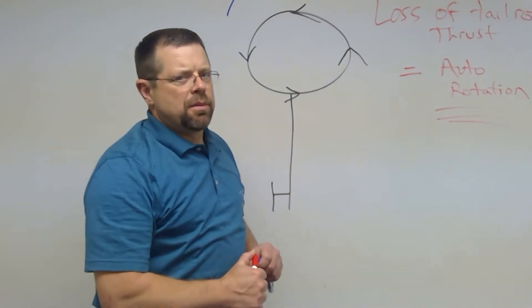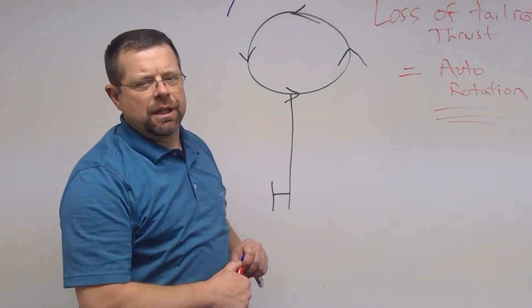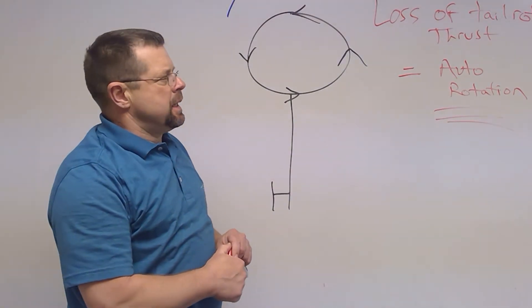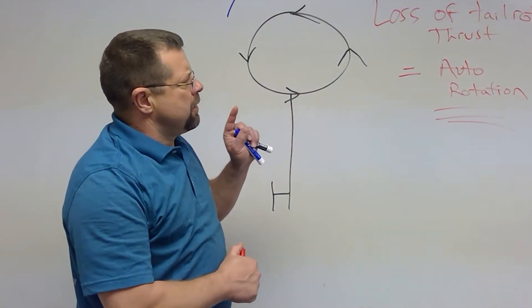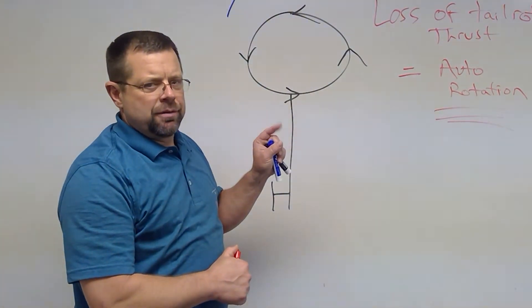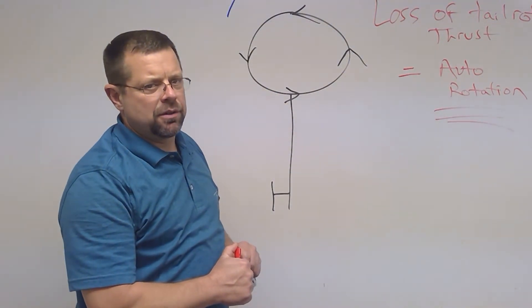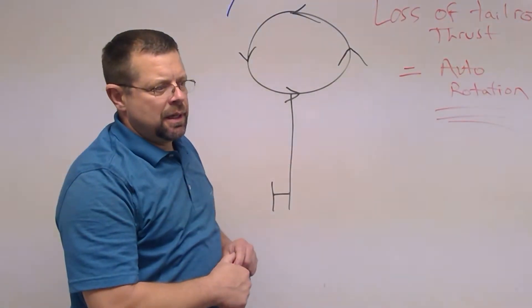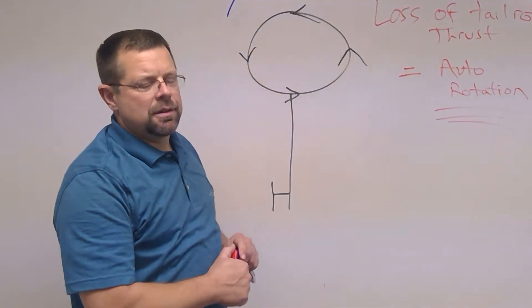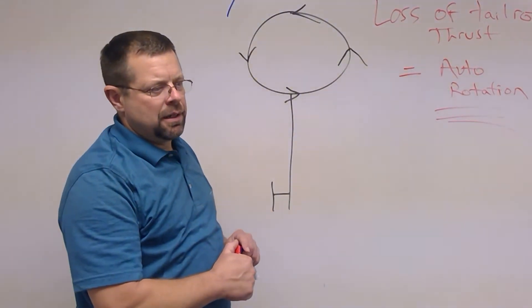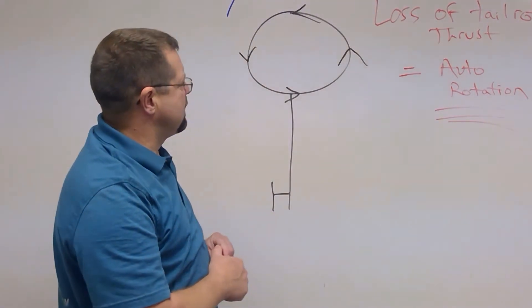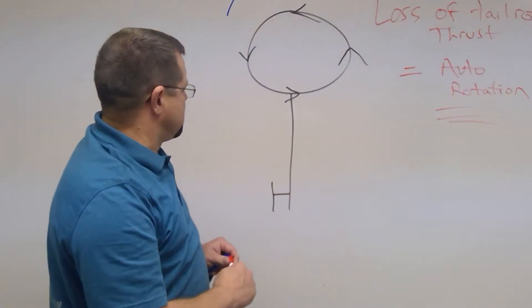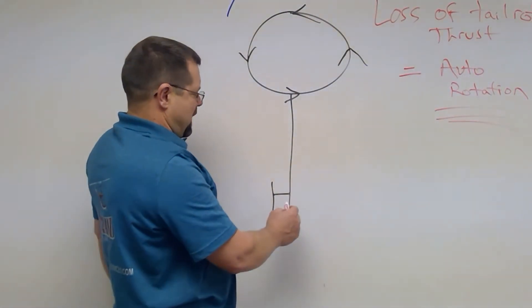Now, a moment ago I talked about prolonging that autorotation to get over a congested area or woods. The key is to enter the autorotation first. If you see that you do not have a suitable spot, you can bring the power back in and fly it with a yaw at a low power setting to maintain enough forward speed to weather vane. However, you cannot do this for very long because you don't know what broke in the tail.